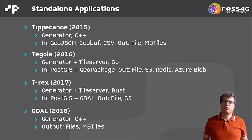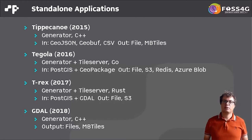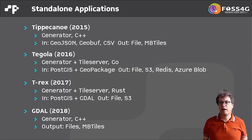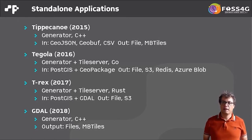The first standalone application is Tippecanoe, published in 2015, a generator for vector tiles written in C++. It reads GeoJSON or GeoBuf as input and creates PBF files or MBTiles. Tippecanoe is still in common use, has good clustering functionality, and is well suited for big data sets.